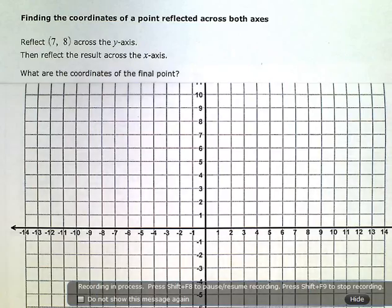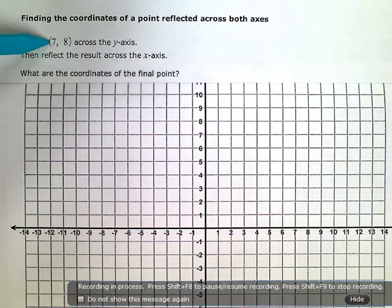Finding the coordinates of a point reflected across both axes. Reflect the point (7, 8) across the y-axis, then reflect the result across the x-axis. What are the coordinates of the final point?